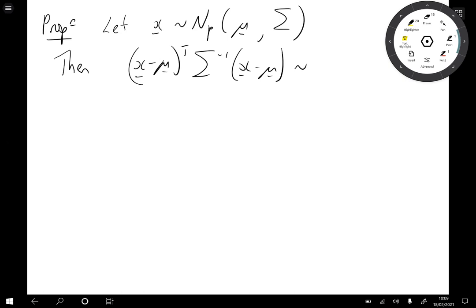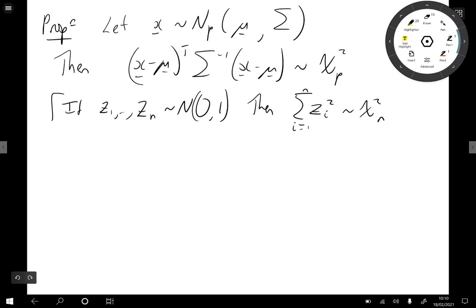It's like a normal minus its mean scaled by its variance all squared. So this it turns out has a chi-squared p distribution. Just to remind you what chi-squared is. If z1 up to zn are normal (0,1), then the sum of the zi squared, i equals 1 to n, has a chi-squared n distribution.